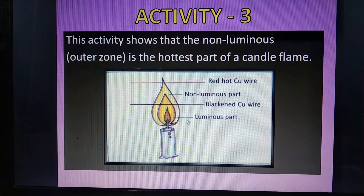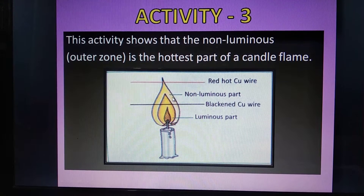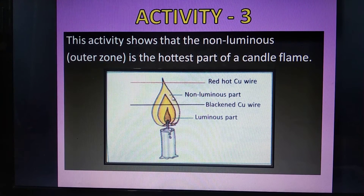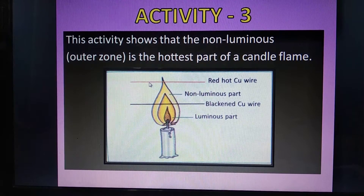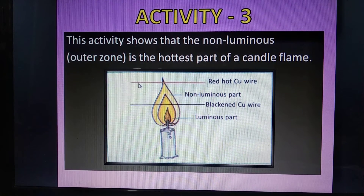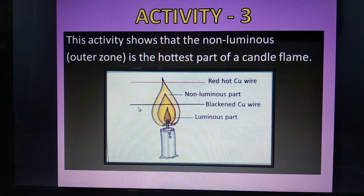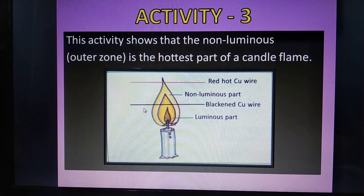This activity will show that the outermost zone or the non-luminous zone of a flame is the hottest. Take a long copper wire and hold its one end with a pair of tongs. Introduce the other end of the copper wire just inside the burning candle flame so that it is in the outermost zone of the flame. Keep the copper wire in this position for about 30 seconds.